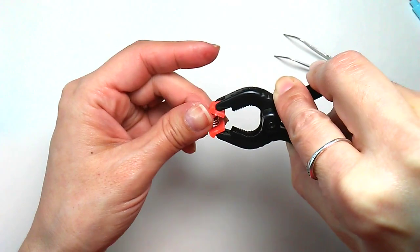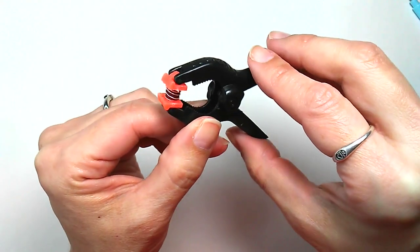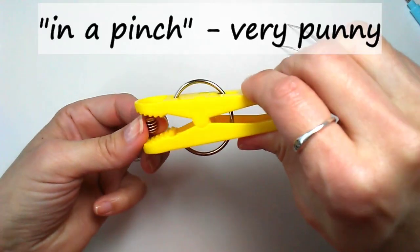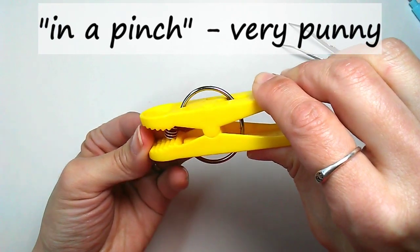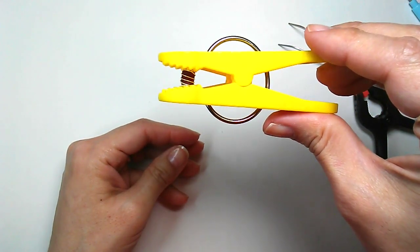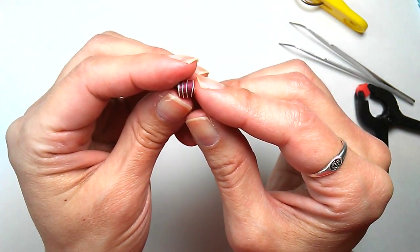Or if you have some small clamps, you can use those. Or maybe some chip clips could work in a pinch too. But anyway, there's our fancified wire wrapped quilled bead.